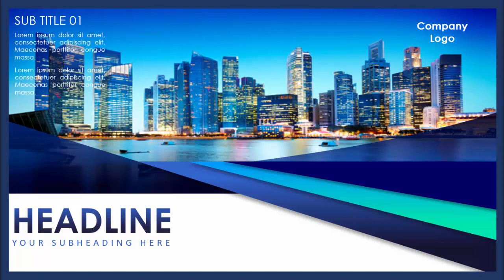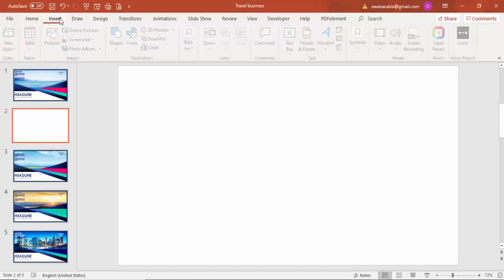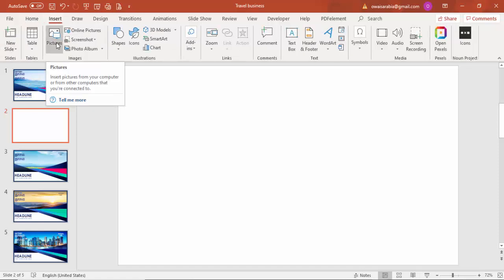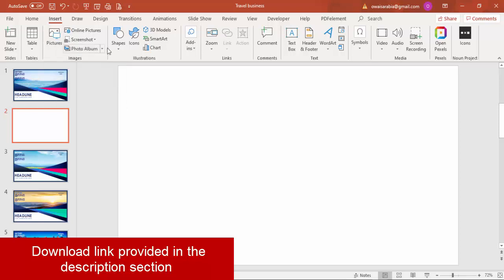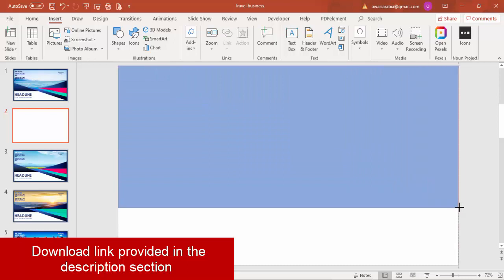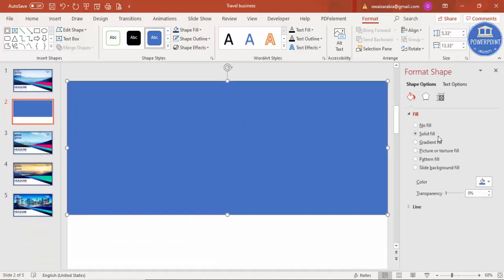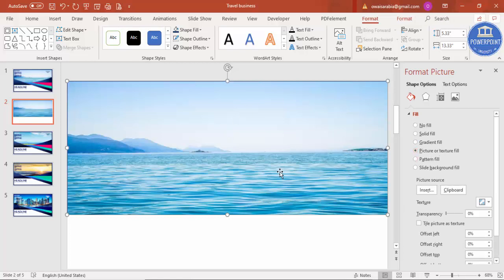Let's see how to do this in PowerPoint. Add a new slide and go to Insert to add an image. Generally I create a rectangle or any other shape first, then later increase or decrease the size. Right-click, go to Format Shape, click on Fill, then click on Picture or Texture Fill.